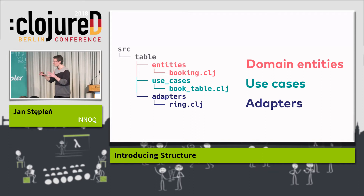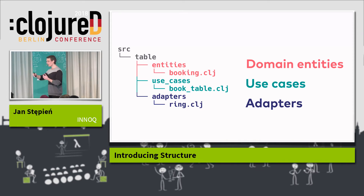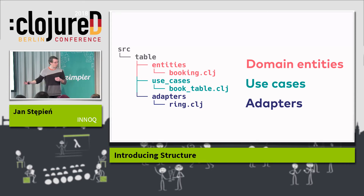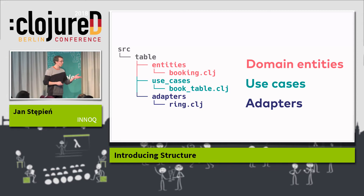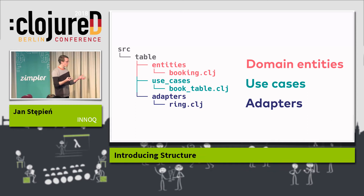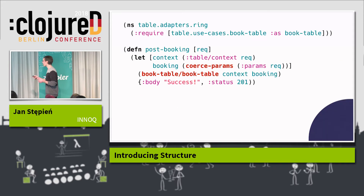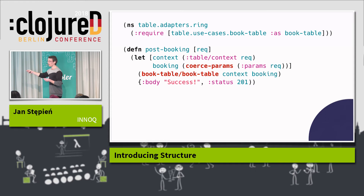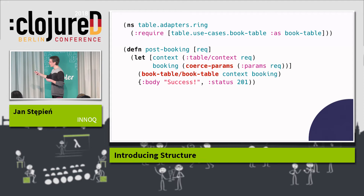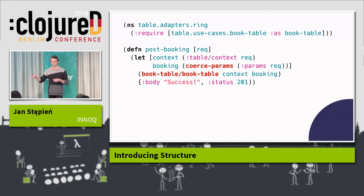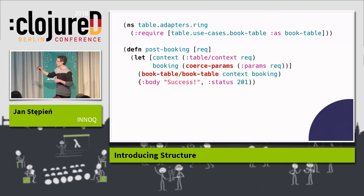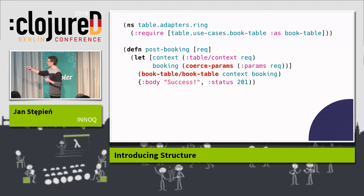Now it's time to expose this pure world to the outside world of HTTP using Ring. Ring is a popular abstraction over HTTP which allows us to express requests and responses as data structures, and handlers of those requests as ordinary functions. In TableAdapters.Ring, we define a handler post-bookings. It takes a request, extracts a context from the request — we'll see where the context comes from in a second — and uses a coerced-params function to get a booking out of the posted parameters.